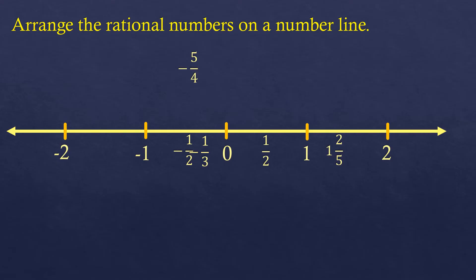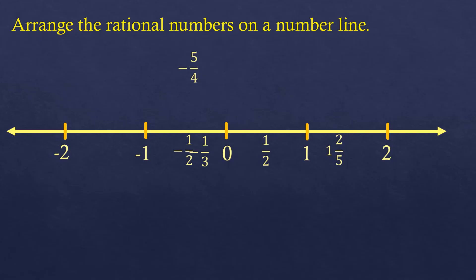Next is 1 and 2 fifths, which is a positive number, so it's on the right side of 0. And it's more than 1, so it's to the right of positive 1. It's 2 fifths past 1, so it's near the middle of 1 and 2 — but not exactly in the middle, since the middle would be 2.5 fifths. So we place it at an estimated position near the middle.